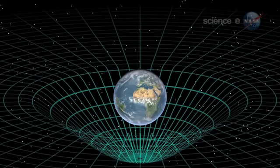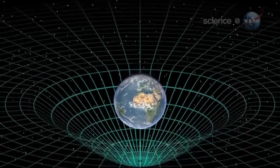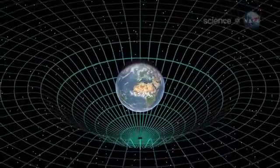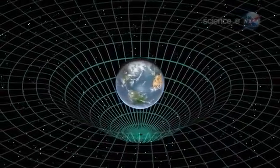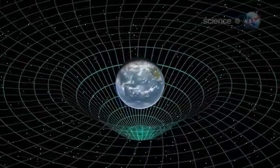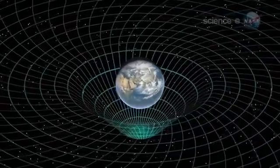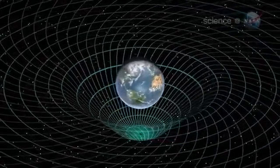If Earth were stationary, that would be the end of the story. But our planet spins, and the spin should pull the dimple around in a four-dimensional swirl. This is what Gravity Probe B went into space in 2004 to check.